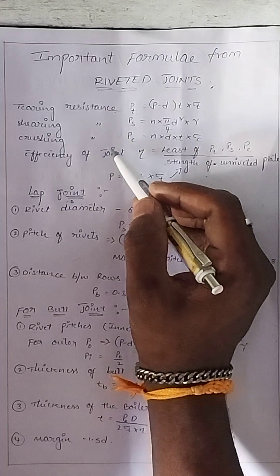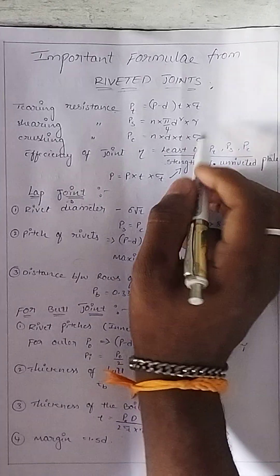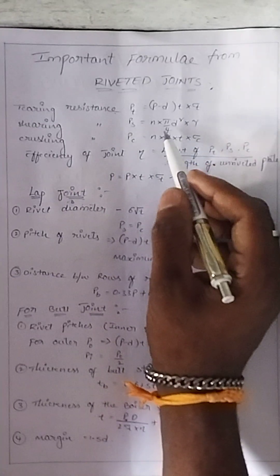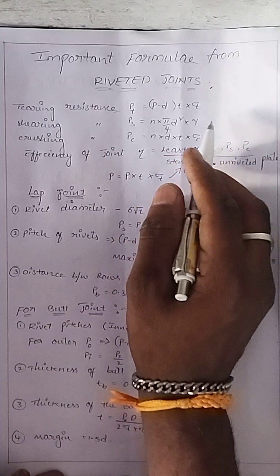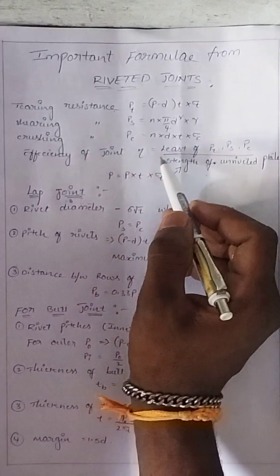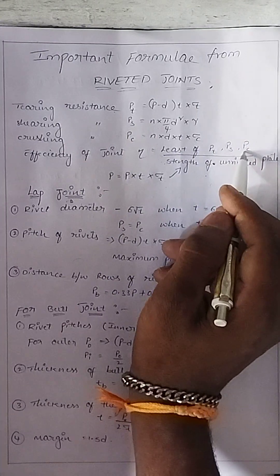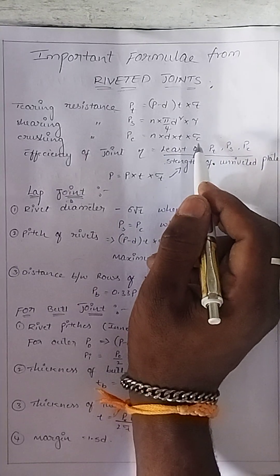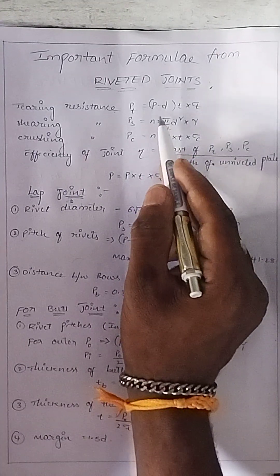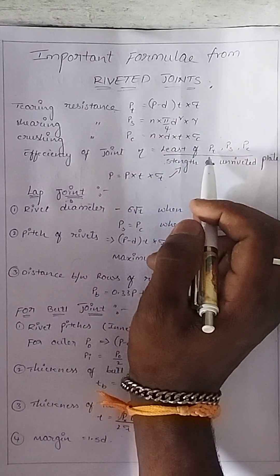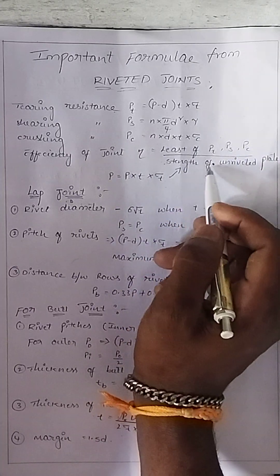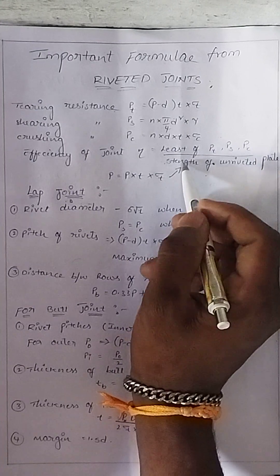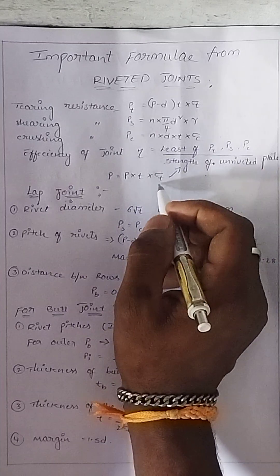Next is crushing resistance PC. Crushing resistance is N into D into T into sigma C (σC). These are the three basic formulas — tearing, shearing, and crushing — for every riveted joints sum. The formula for joint efficiency is: least of PT, PS, PC divided by the strength of the unriveted plate.